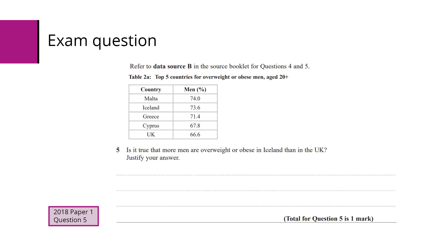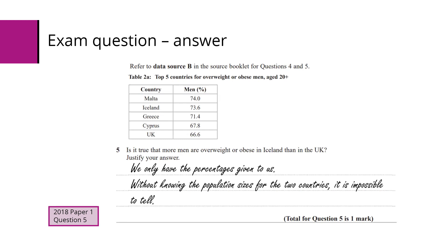Another exam question references a data source — a table showing the top five countries for overweight or obese men aged 20 and over, with each country's percentage. The question asks: is it true that more men are overweight or obese in Iceland than in the UK? Iceland has 73.6% and the UK has 66.6%, but if we don't know the actual population sizes for both countries, it's impossible to tell whether Iceland has more men from percentages alone.